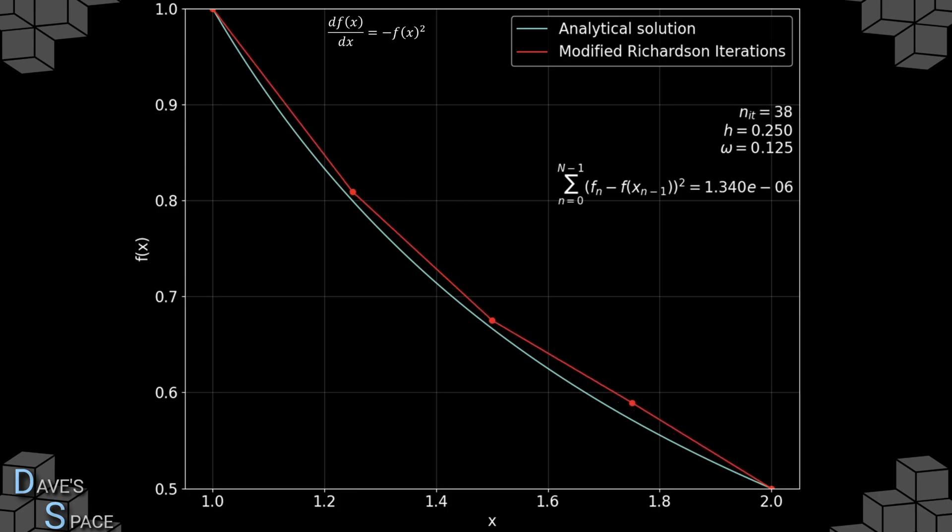Since the analytical solution is rarely known, we need a way to know when to stop. To do this, we calculate the sum of the square differences between successive iterations, and stop when that difference reaches some minimum value. We can see that this value decreases with every iteration, that is to say, it asymptotically approaches a minimum value. The solution here takes over 100 iterations and gives an okay estimate to the true analytical solution.